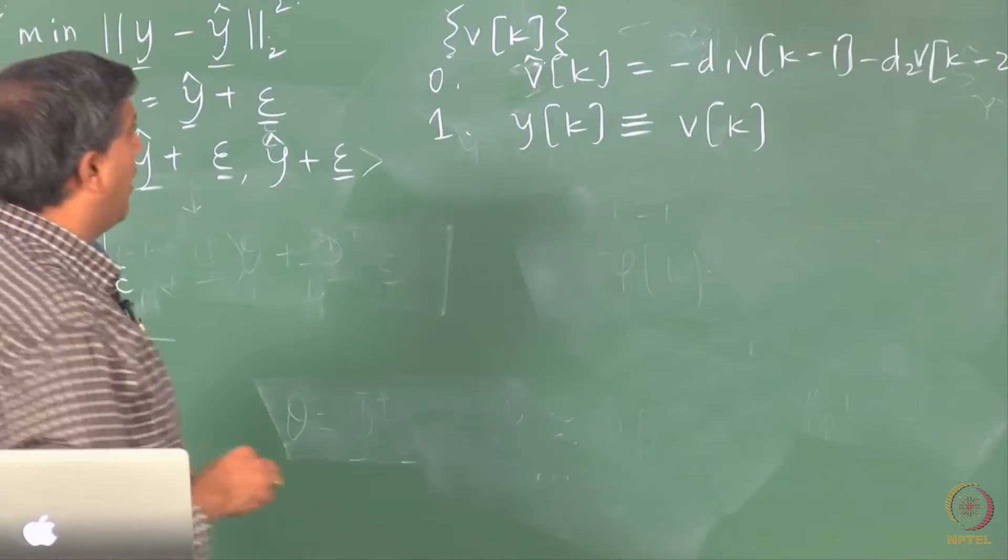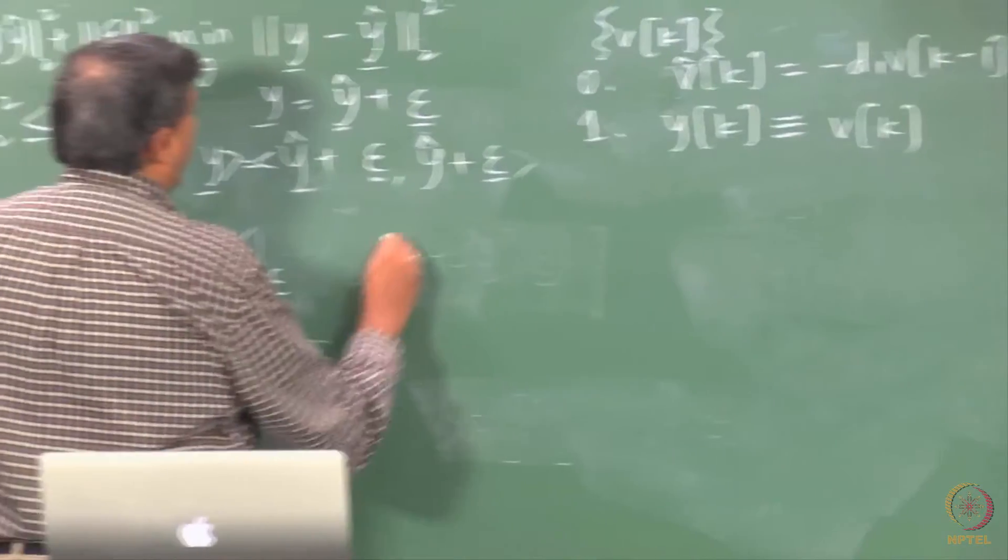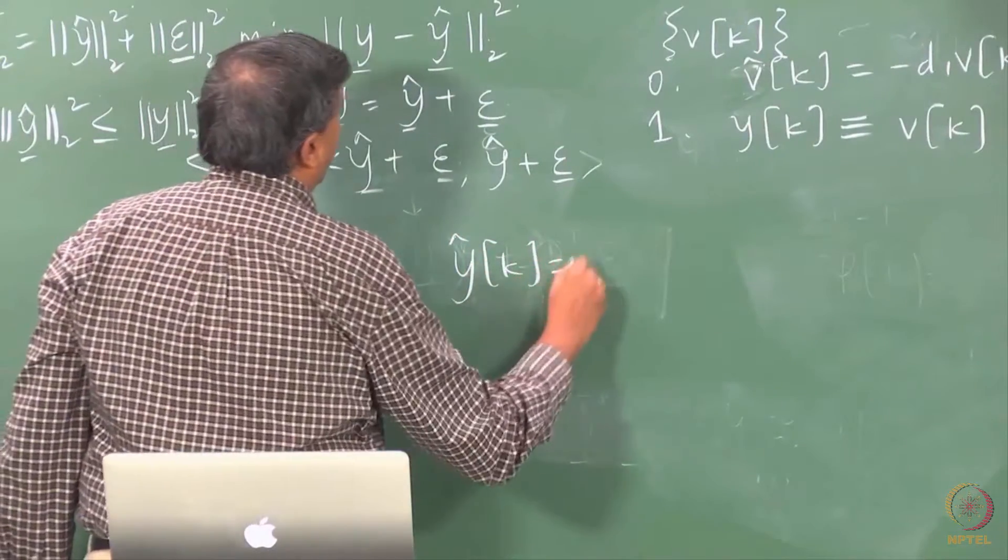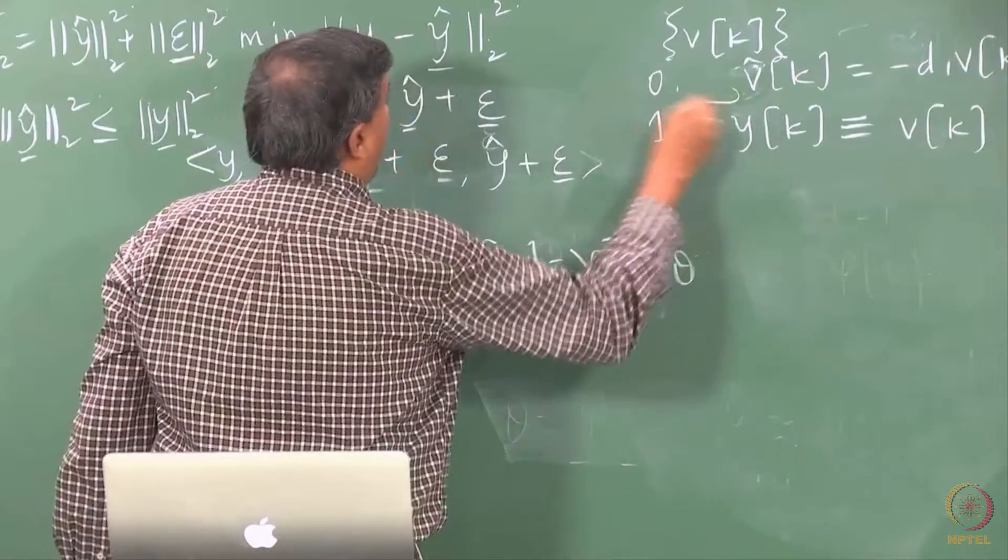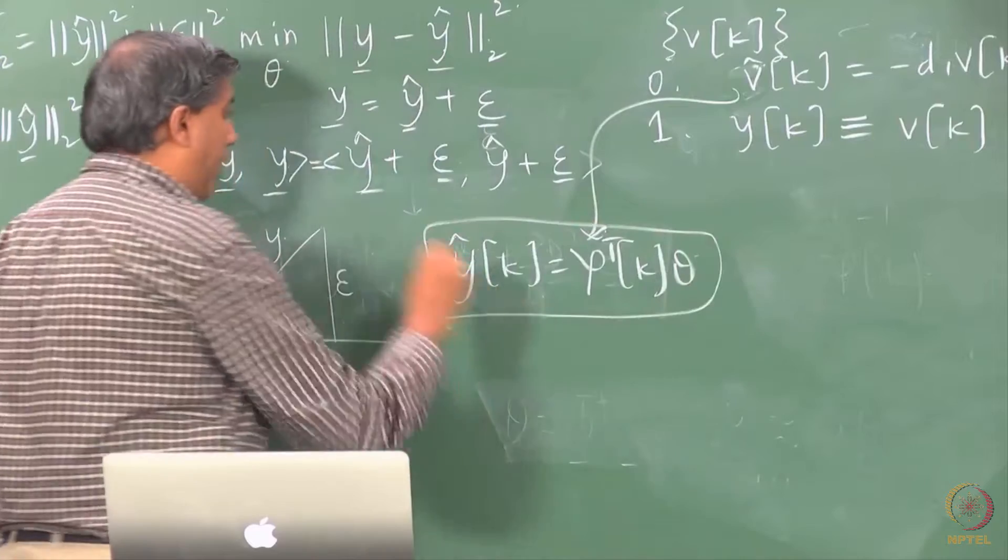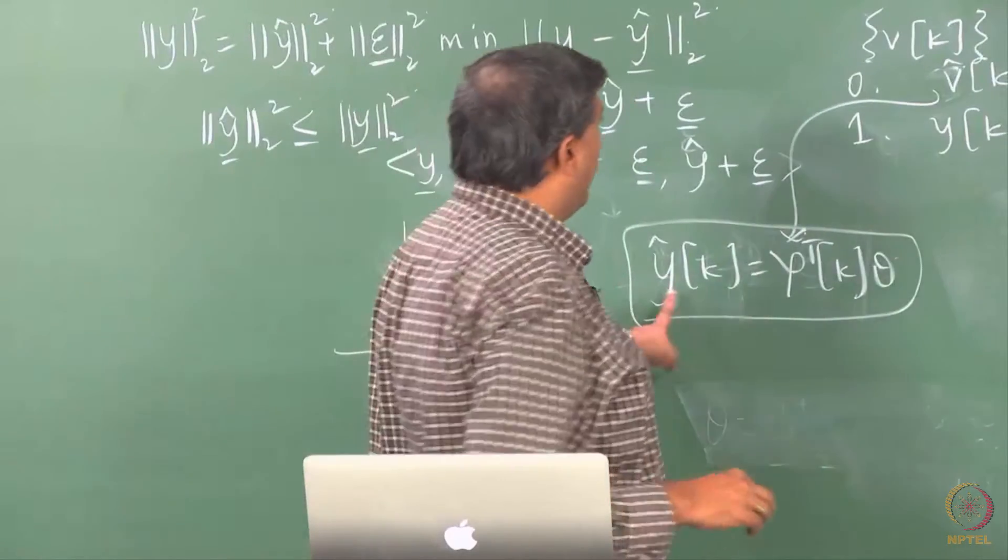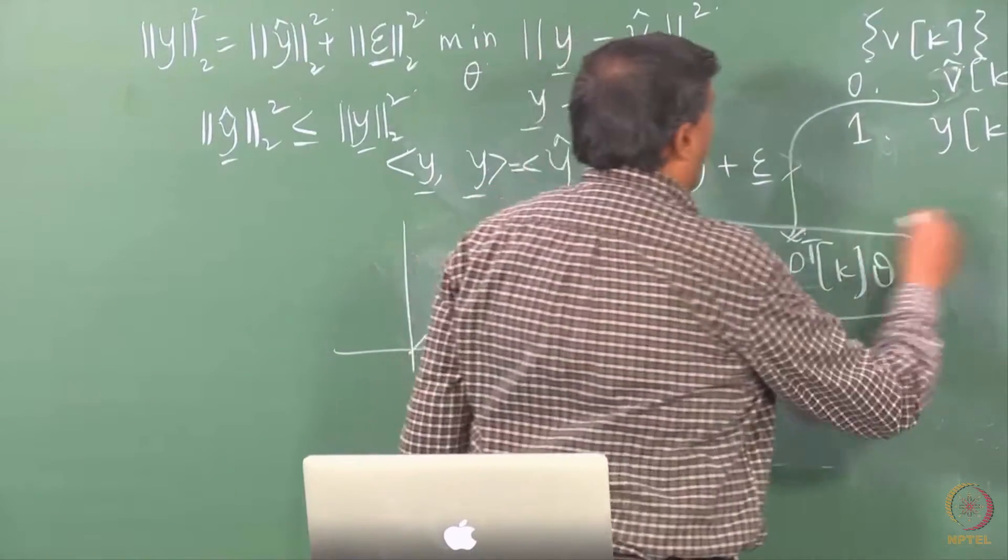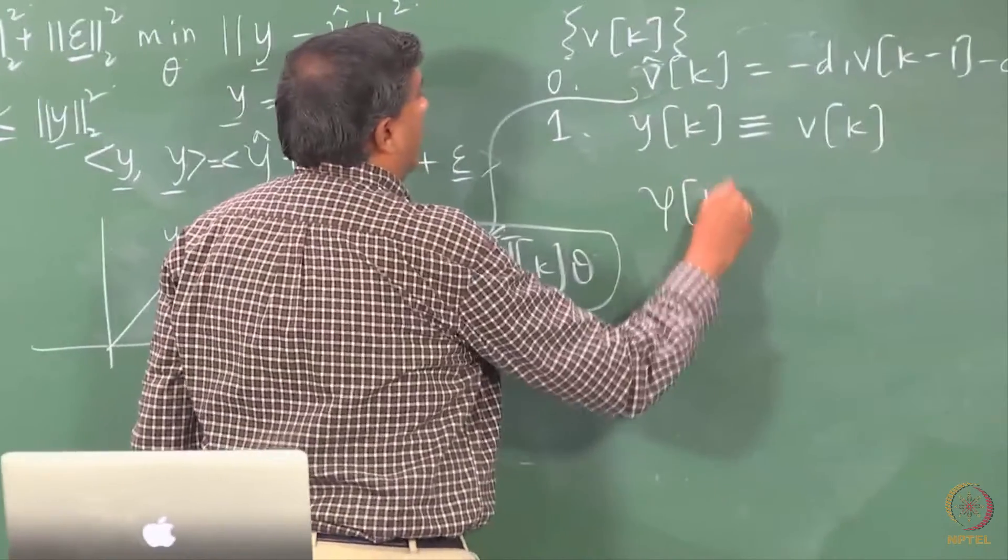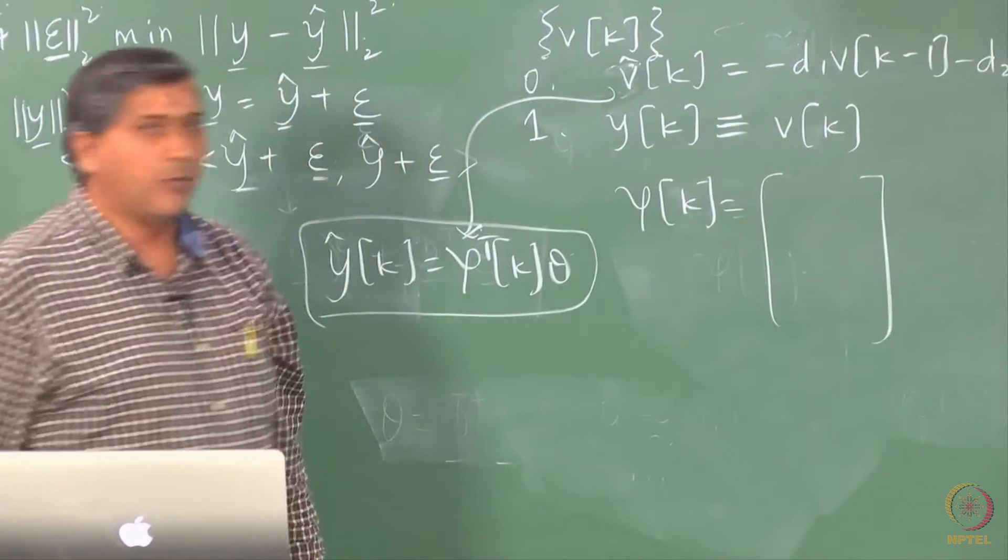Now I can compare this equation with the, this equation here, Y hat of K. So I compare this equation with the equation that I have used in linear regression. From where I can see Y is V. And then what about the regressor vector?